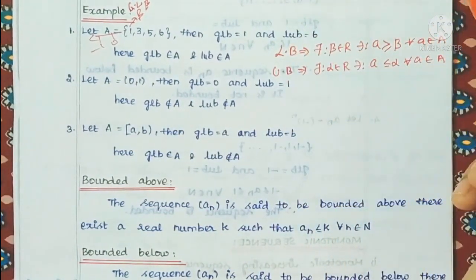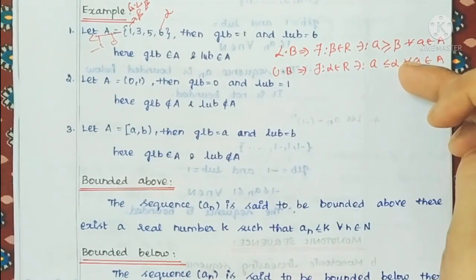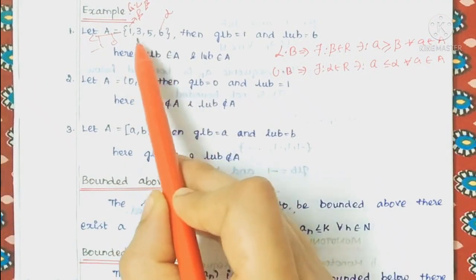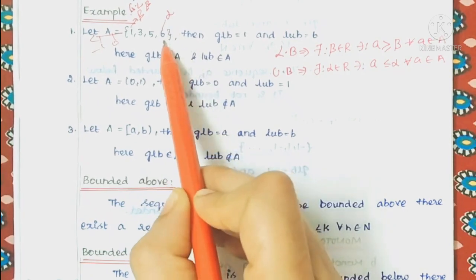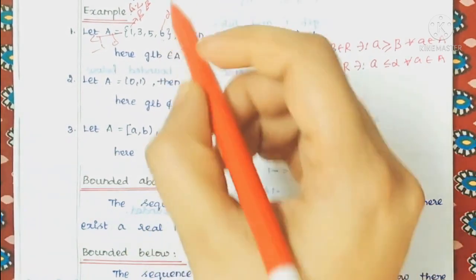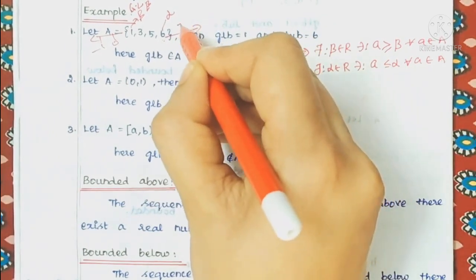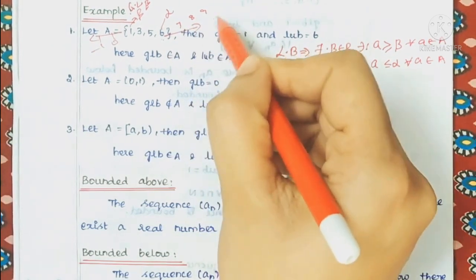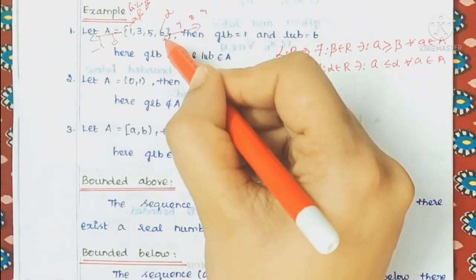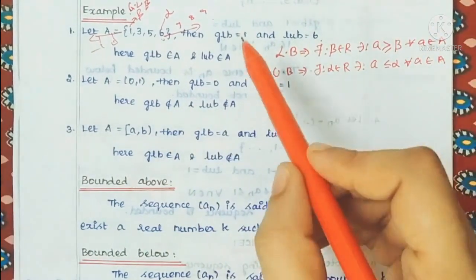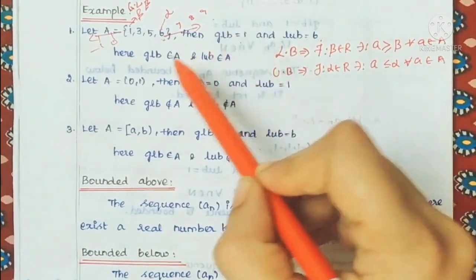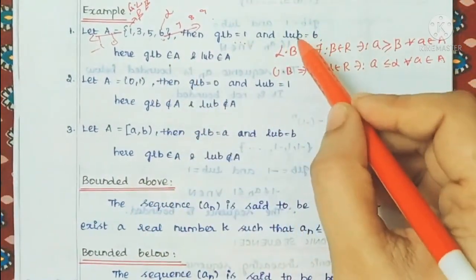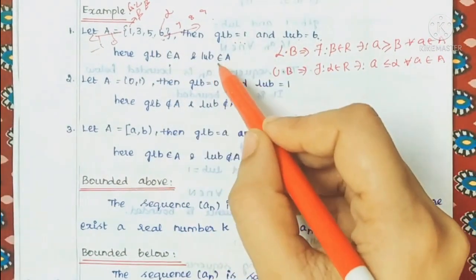Next, the least upper bound. If I add alpha, every element of the set is less than or equal to alpha. We have 6 as the upper bound. If we extend to 7, 8, 9, those are also upper bounds. So 6 is the smallest upper bound — 6 is the least upper bound. Note that 1 (the greatest lower bound) belongs to the set, and 6 (the least upper bound) also belongs to the set.